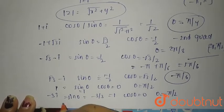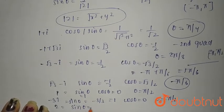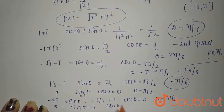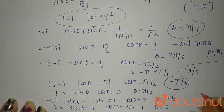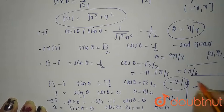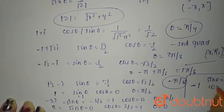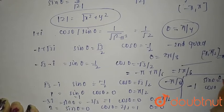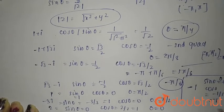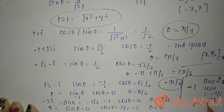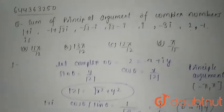For 2: sin θ = 0 and cos θ = 2/2 = 1, so θ = 0. For −1: sin θ = 0 and cos θ = −1/1 = −1, so θ = π.